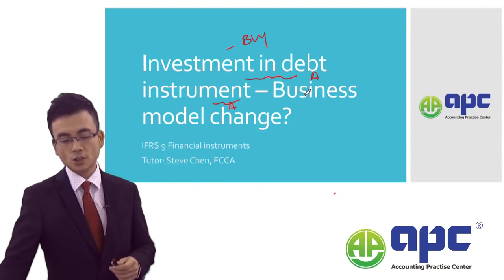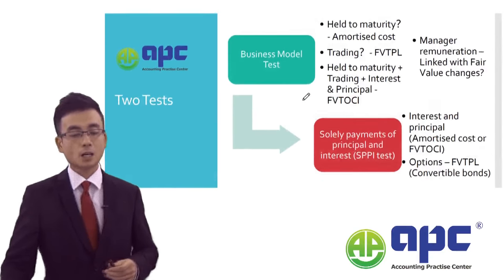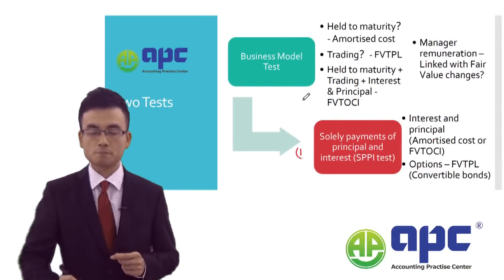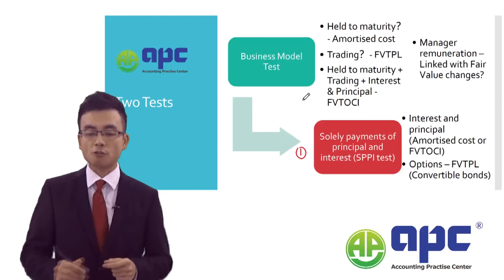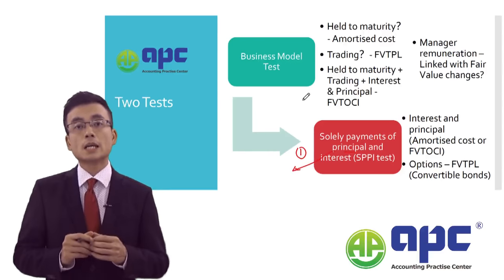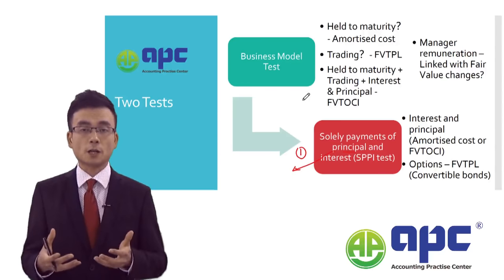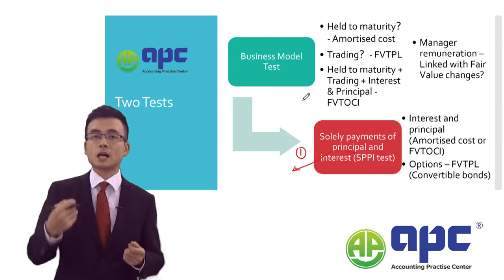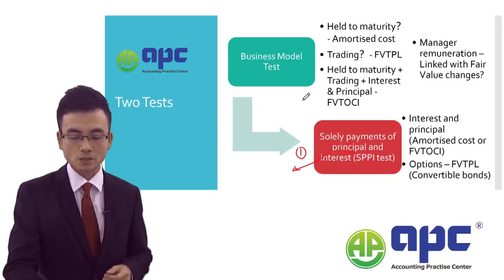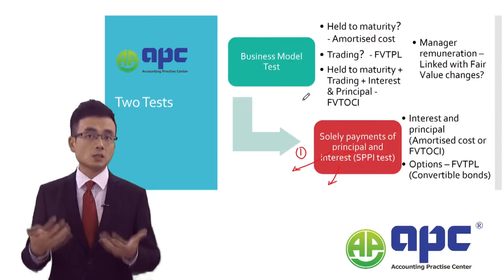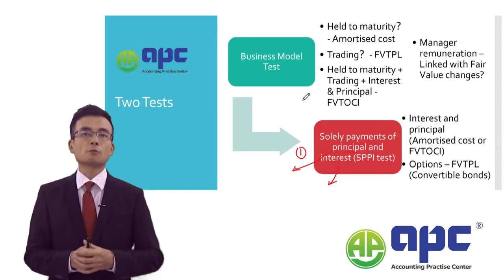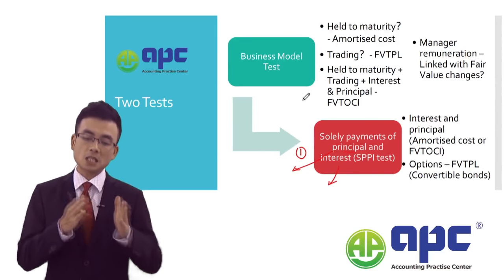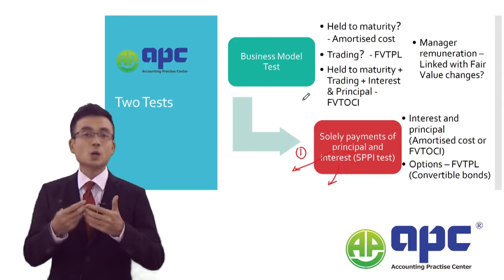According to IFRS 9 Financial Instruments, it really depends on two tests. The first test is shown in red at the bottom — it is the Solely Payment of Principal and Interest, or SPPI test. Principal is the total money you can get back — the face value. So for example, I buy this bond and at the end of the third year, I can get $100 back, which is the money I put in in the first place. Interest means as time goes by, I can get interest to compensate for my opportunity cost of lending this money.